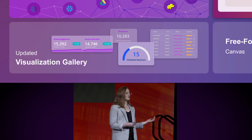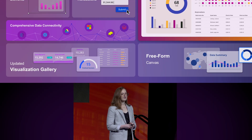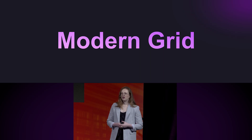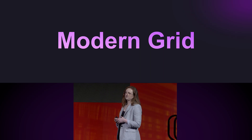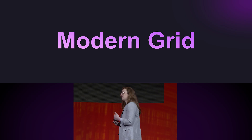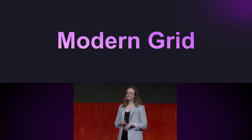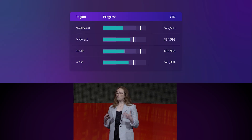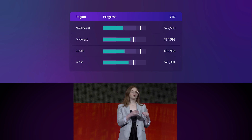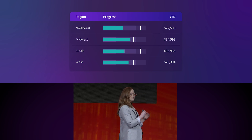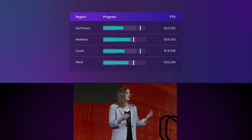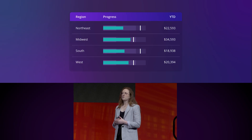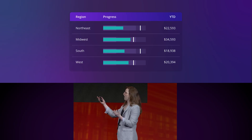Sankey charts display data workflows and connections at a glance. Gauges track your progress towards a target goal. We also have the full modern grid, which now offers faster performance and loading times. Microcharts within the grid allow you to add more granular detail through individual visualizations at the individual row level. Microchart options such as the bullet chart allow users to compare trends or progress across different rows.